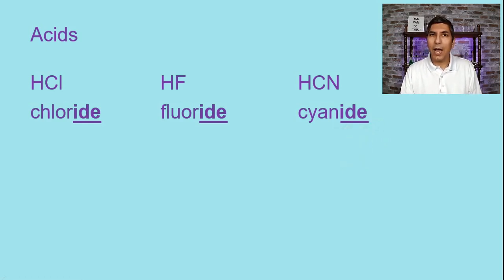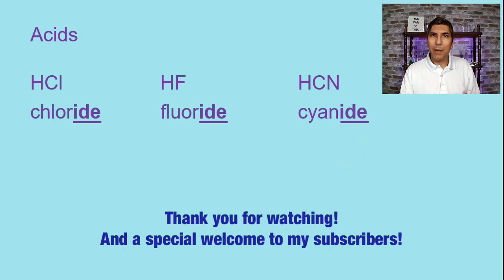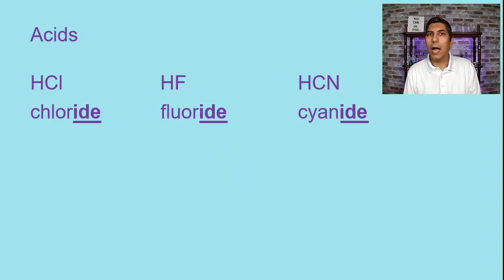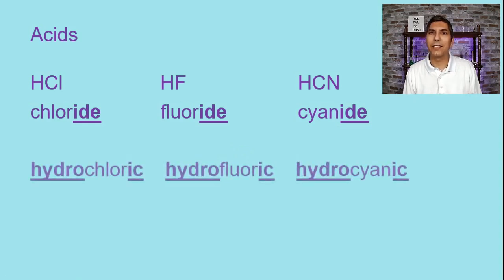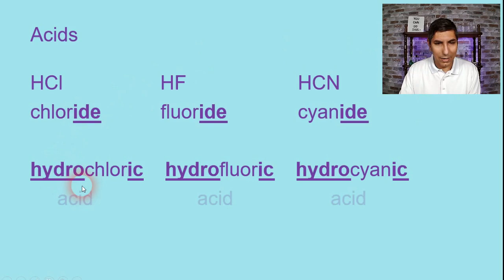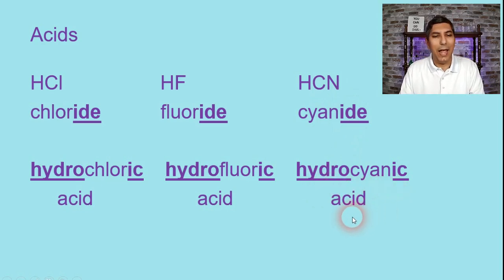So in order to name these acids, I'm going to take off the IDE. I'm going to replace it with IC, and then I'm going to put hydro, H-Y-D-R-O, at the front of that acid's name. So H followed by chloride becomes hydrochloric acid. Hydrogen followed by the fluoride ion becomes hydrofluoric acid. Hydrogen followed by the cyanide ion becomes hydrocyanic acid.